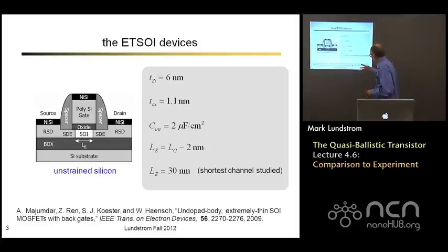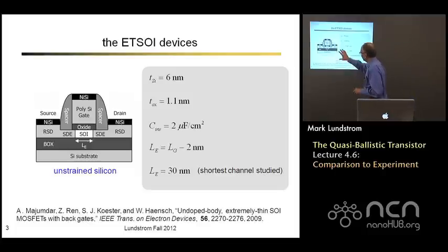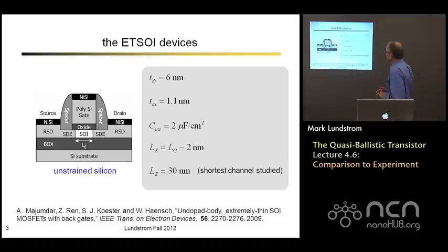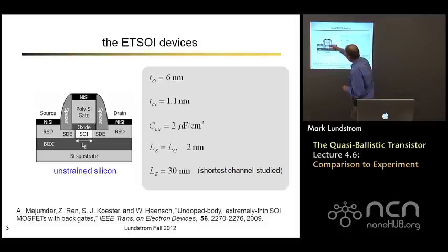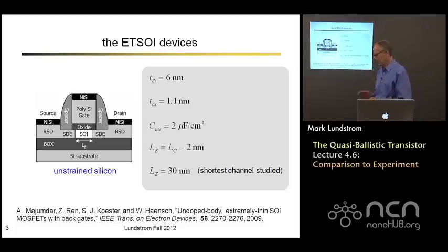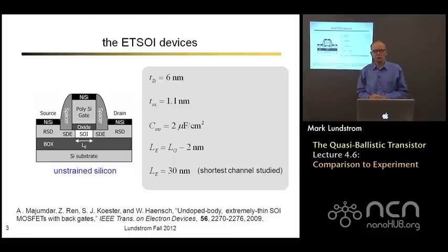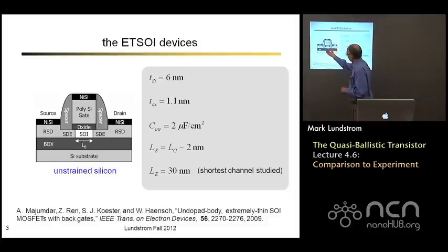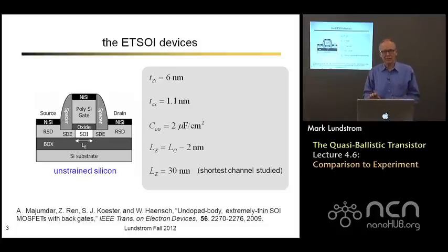The devices we're going to look at are being explored at IBM research—extremely thin SOI transistors and short-channel MOSFETs. Here's a cross-sectional sketch of what the structure looks like. These particular devices are made in unstrained silicon. The thickness of this extremely thin SOI layer is 6 nanometers, which is really very thin. The gate oxide thickness is 1.1 nanometers, which is state of the art—about as thin as you can make it without too much tunneling leading to too much gate leakage. The shortest devices we'll be looking at are 30 nanometer physical channel lengths.